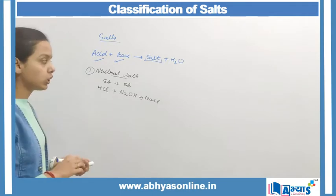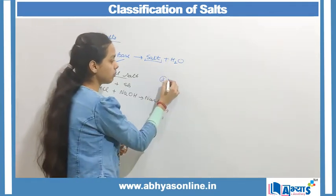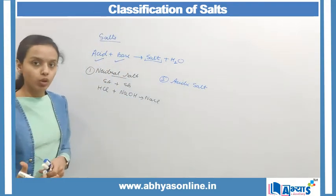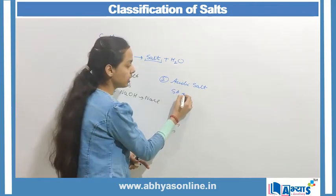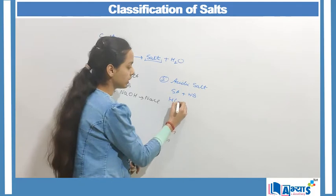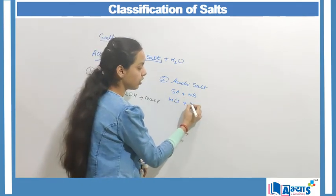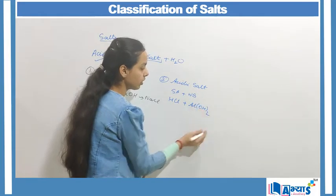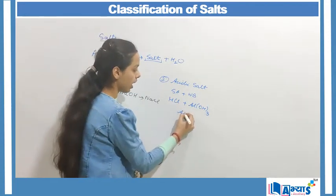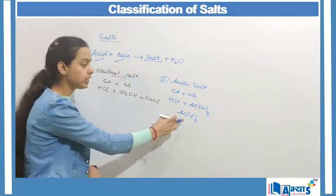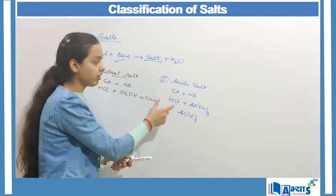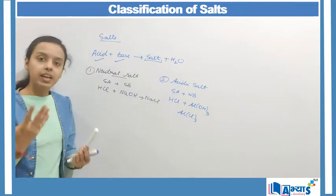The second classification is the acidic salt. Acidic salts are those types of salts which are formed when a strong acid reacts with a weak base. For example, if hydrochloric acid reacts with a weak base that is aluminium hydroxide, Al(OH)₃, we will get aluminium chloride, AlCl₃. In this case the acid is stronger, so the effect of the stronger element — the acid — is reflected in the category of salt, and hence it becomes an acidic salt.